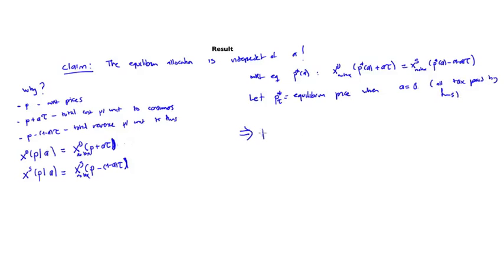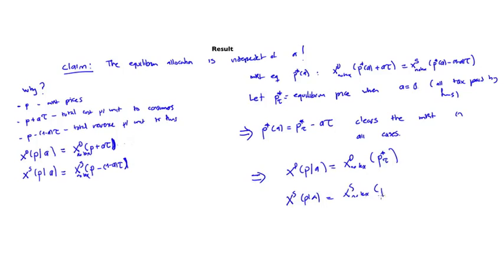Then notice that this implies P star of A equals P star of tau minus A tau clears the market in all cases. Why? Because if you substitute here, the demand for P given A equals the demand with no tax at P star of tau, and the supply at P of A equals the supply with no tax at P star of tau minus tau.